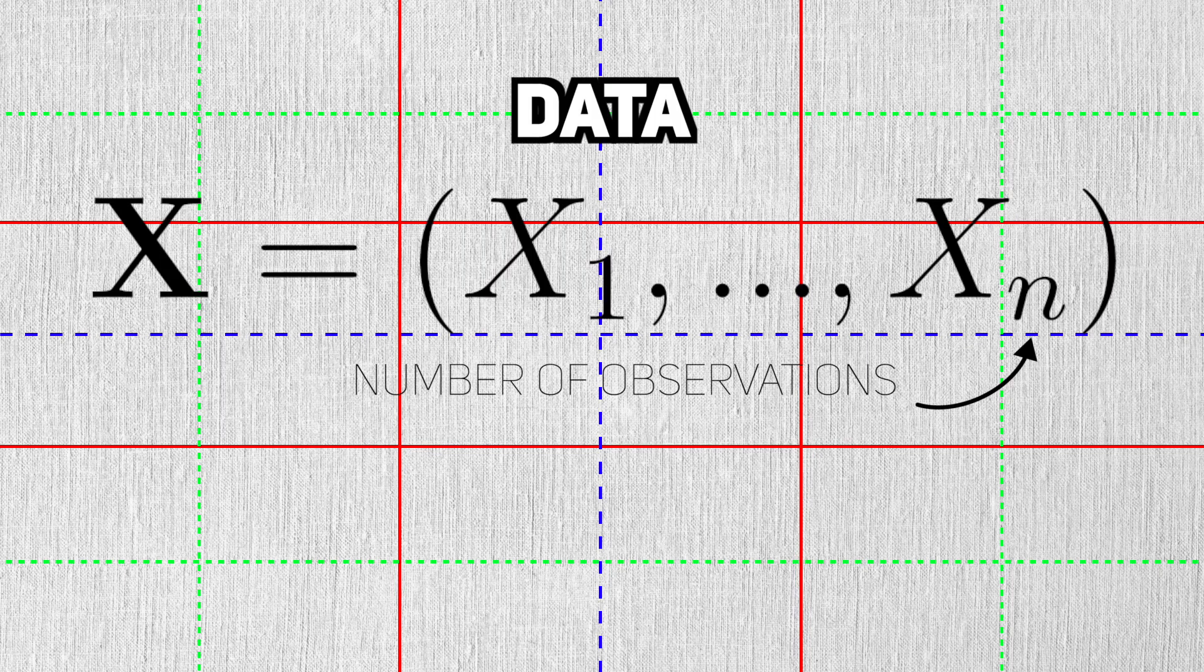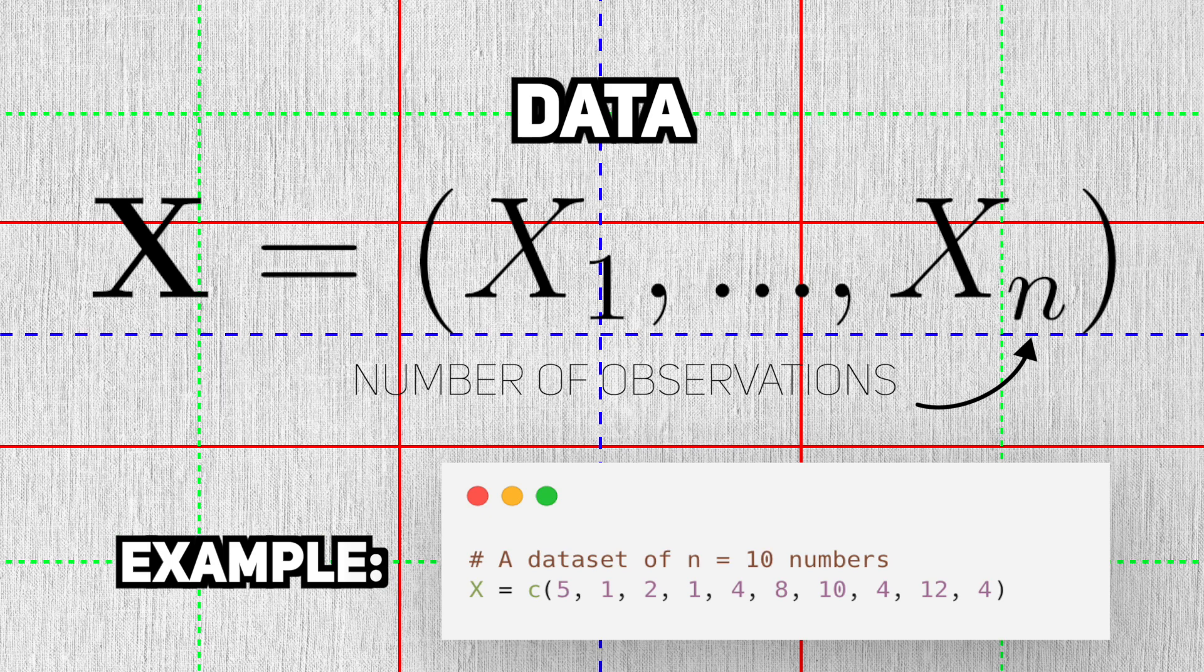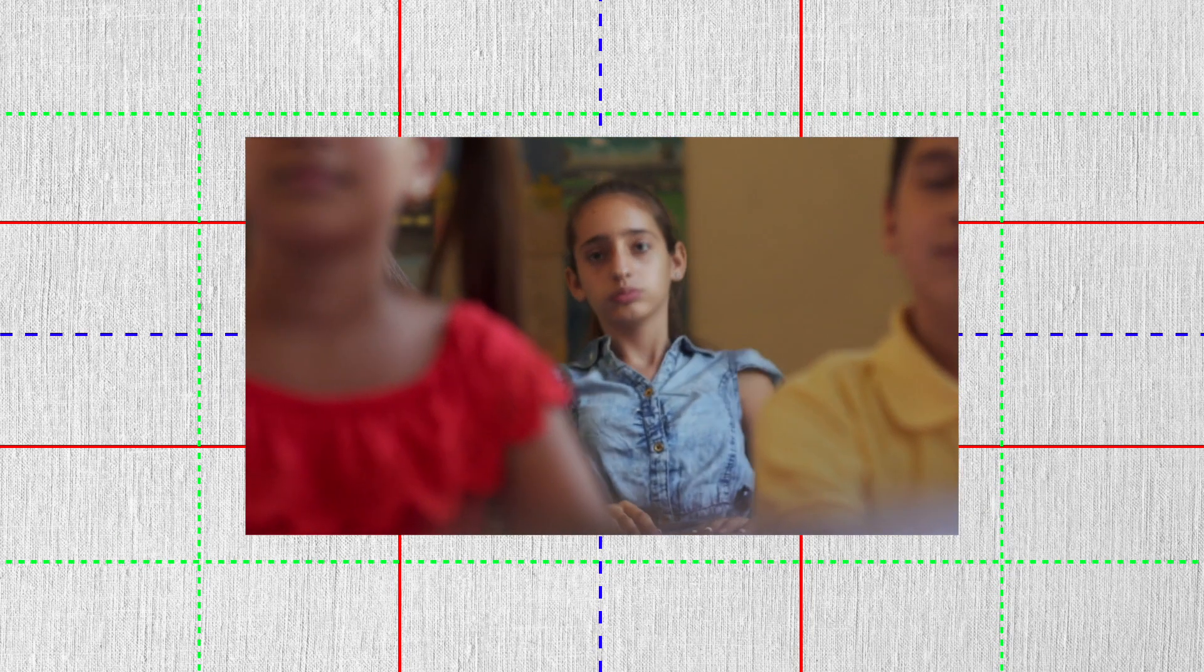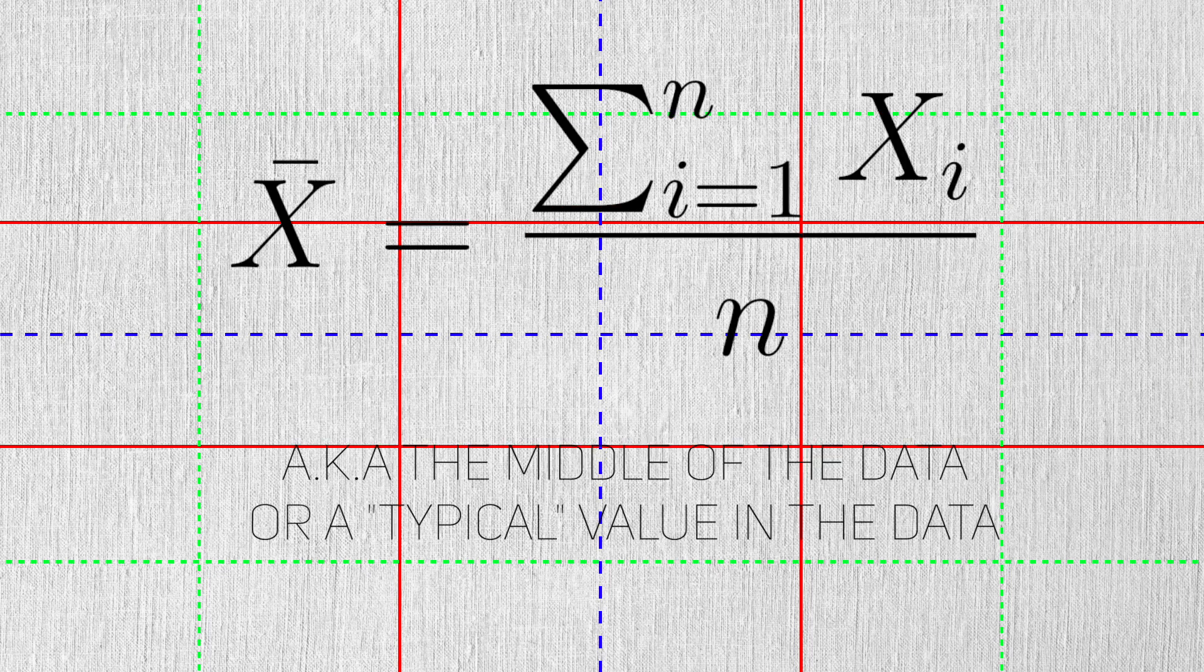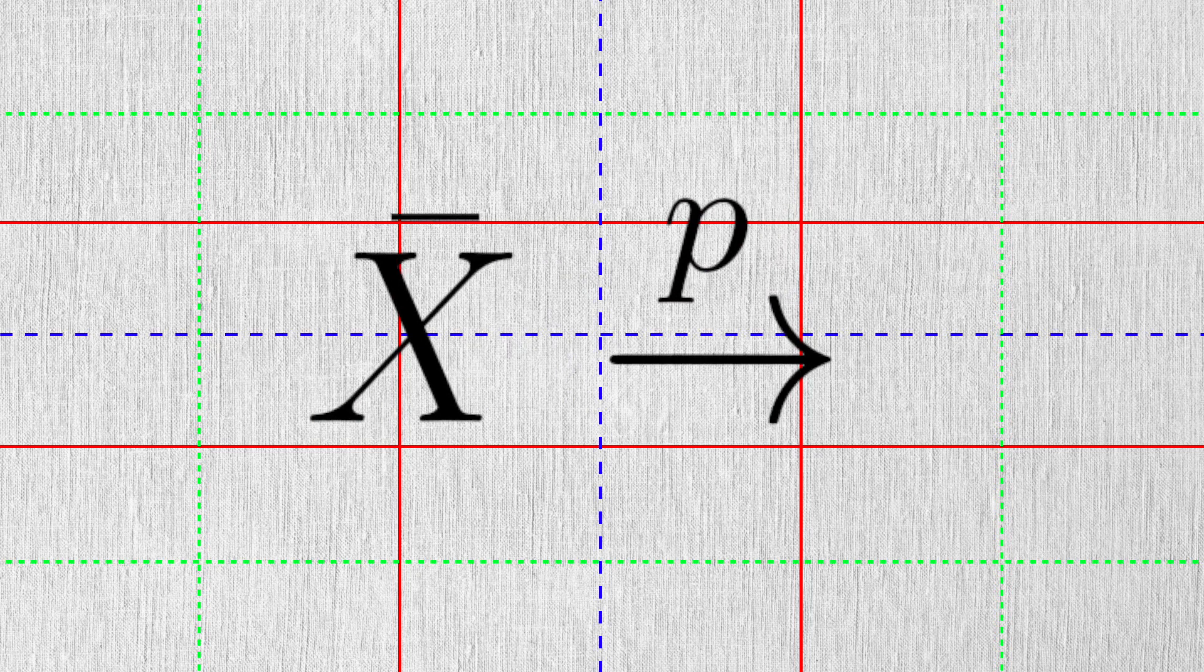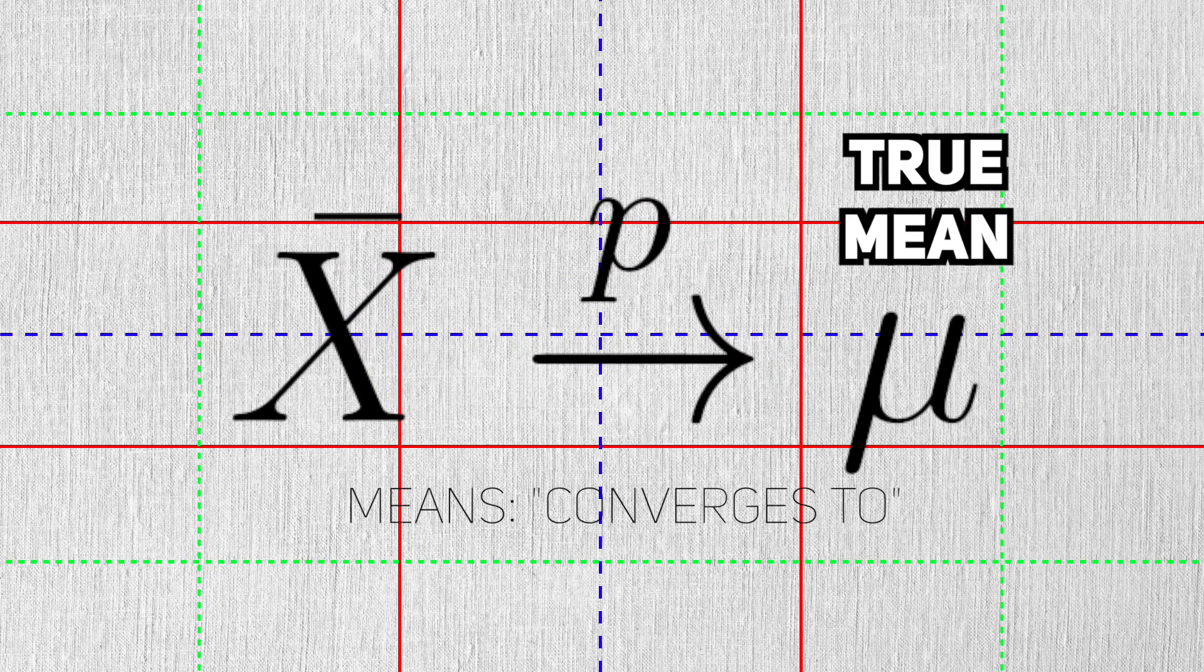Data is usually depicted as n observations, usually using x's as the notation. For many of us, the first statistic that we ever learn about is the sample mean. You sum up the observations and divide by how many there are. The sample mean is supposed to estimate the population mean, which we think of as the true mean.